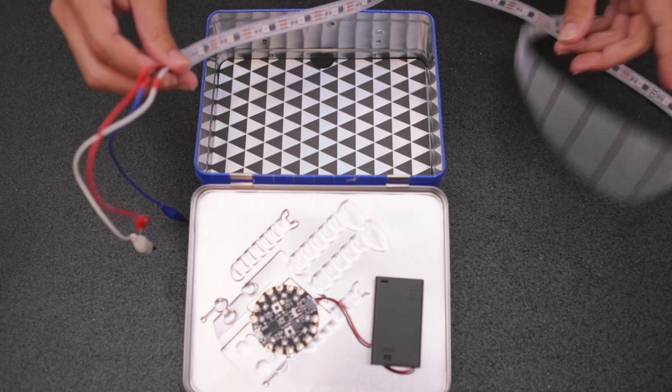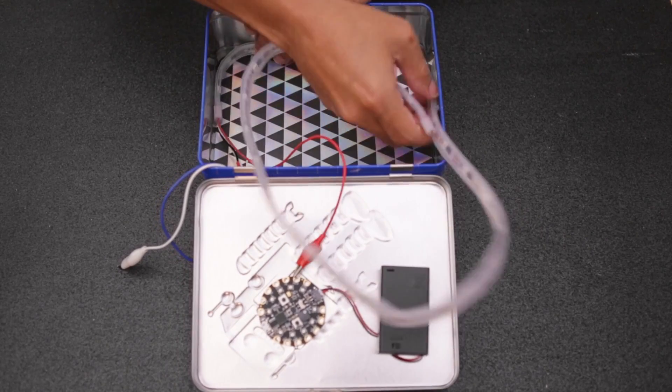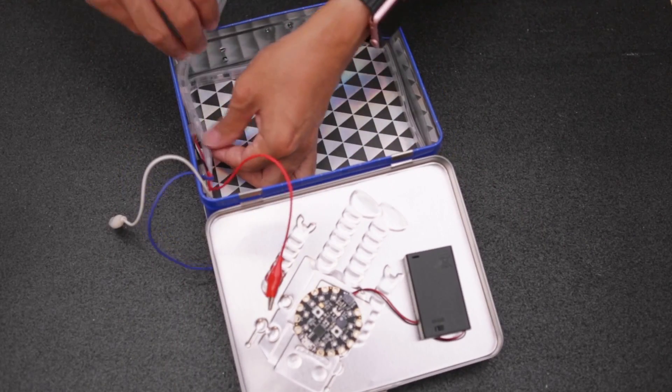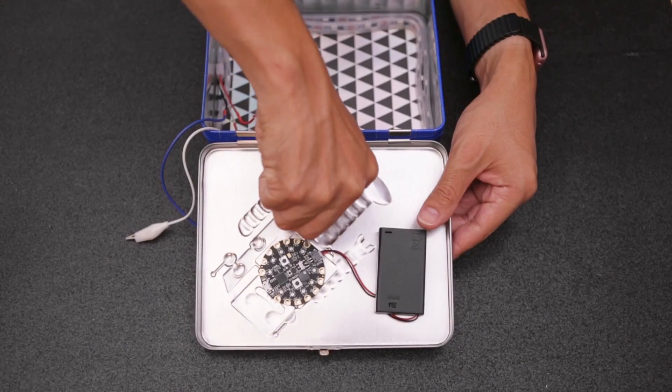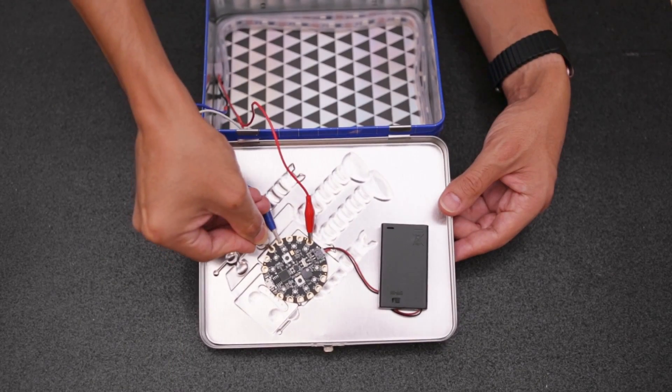Line the inside of the lunchbox with the strip of NeoPixels. Just make sure the LEDs are facing inwards. The silicone sheathing is grippy so it'll hold itself together. Then you can attach the alligator clips to connect the strip.